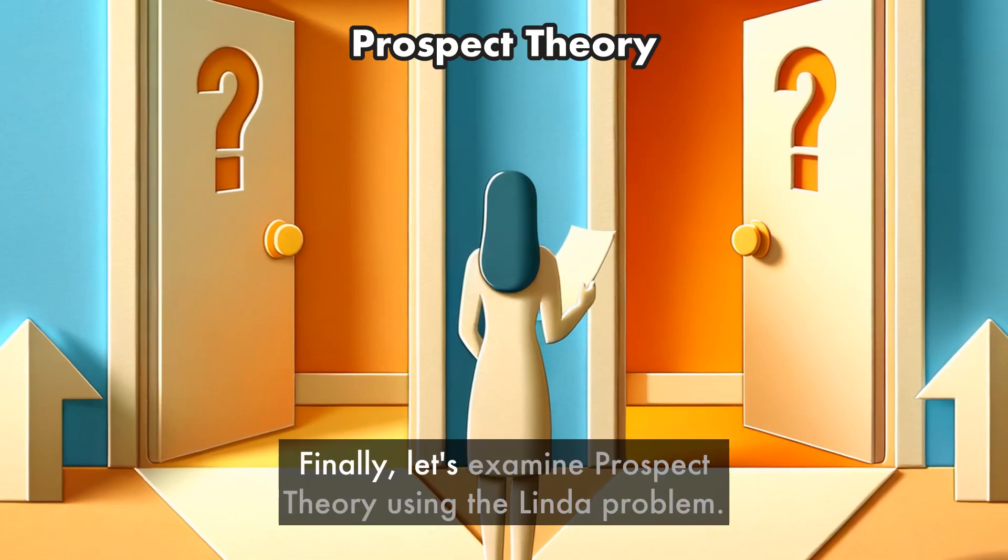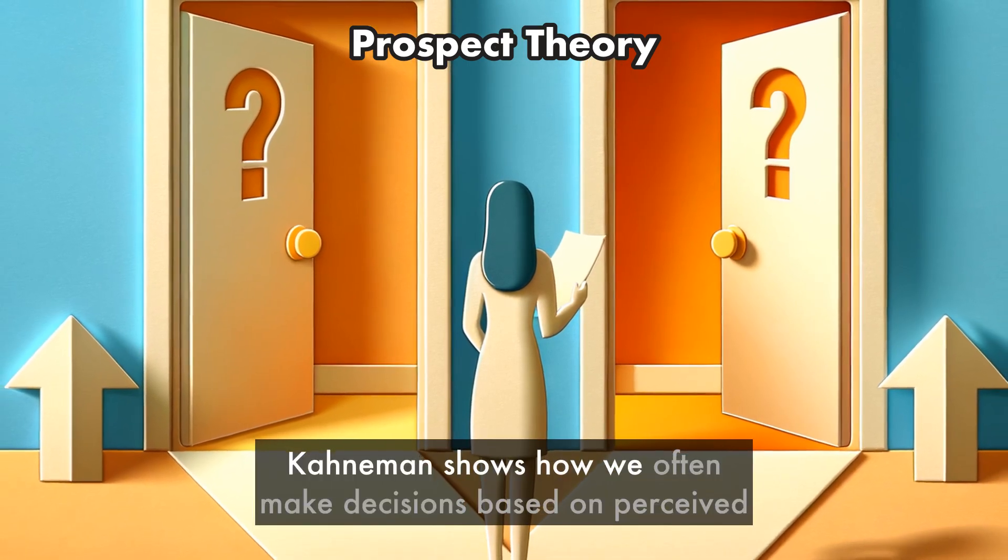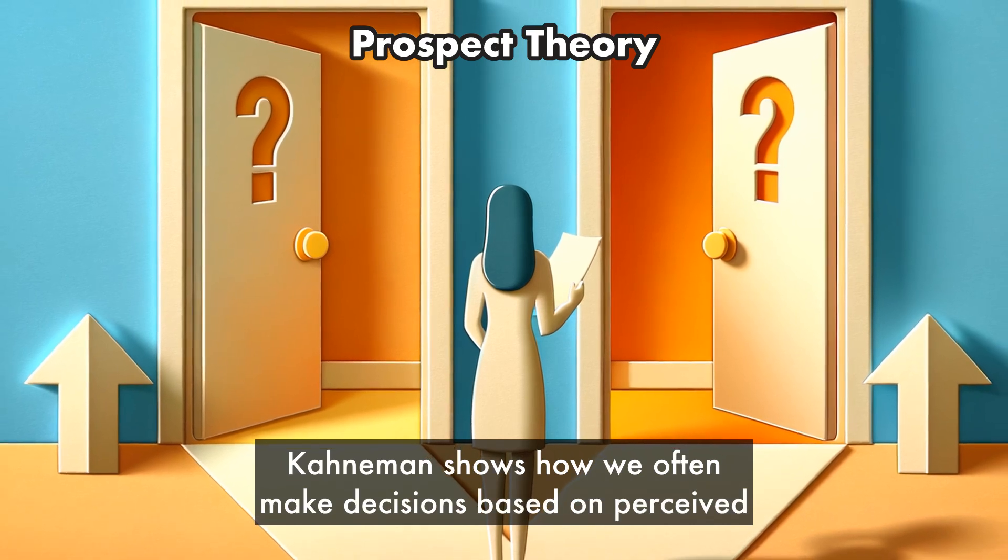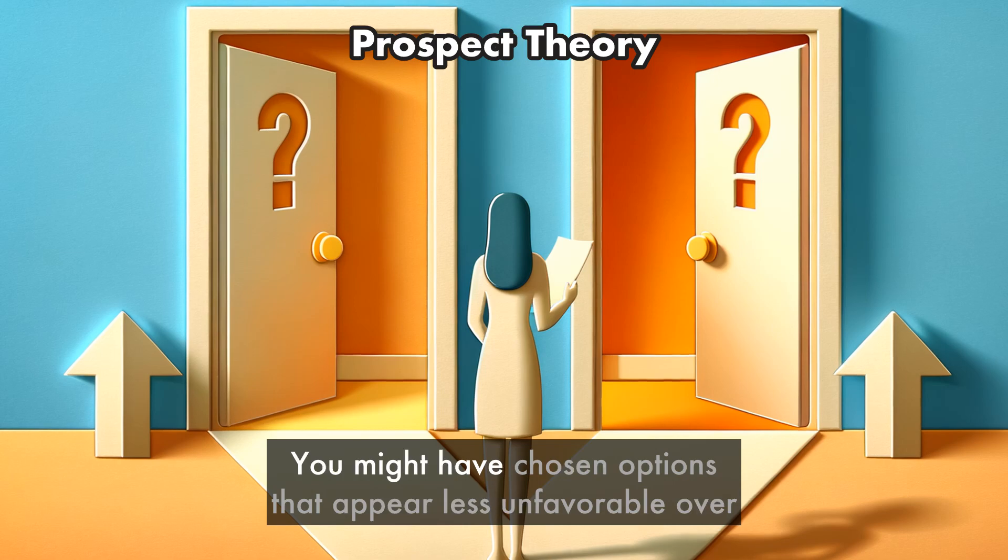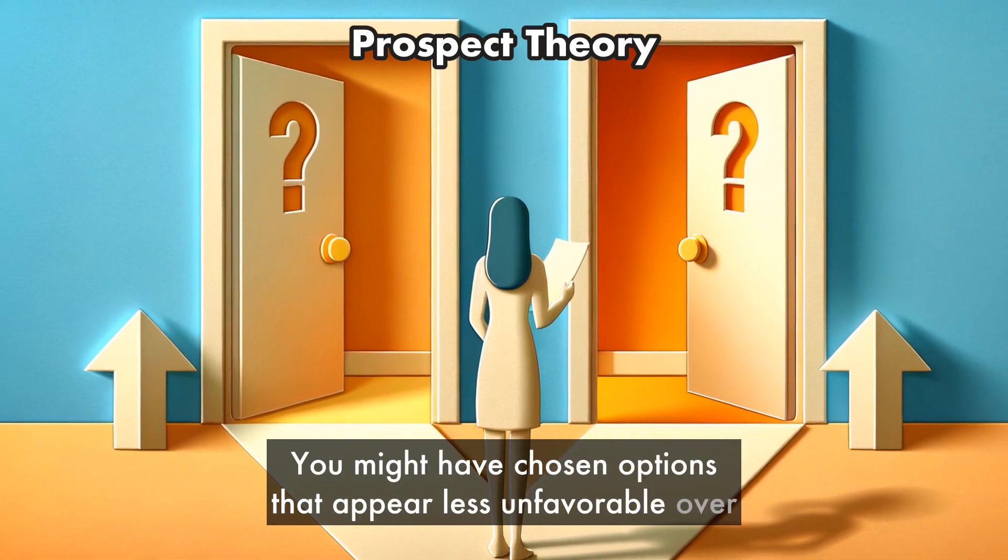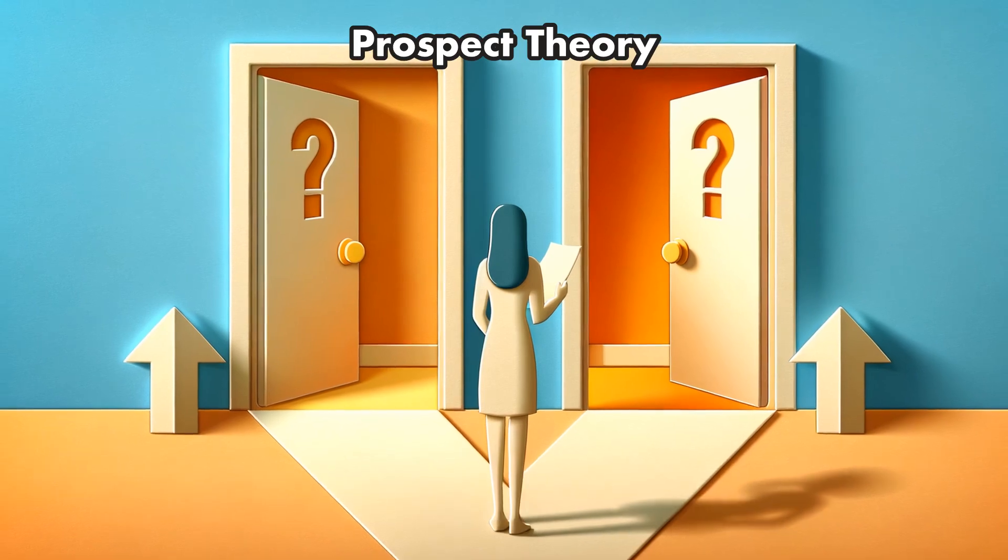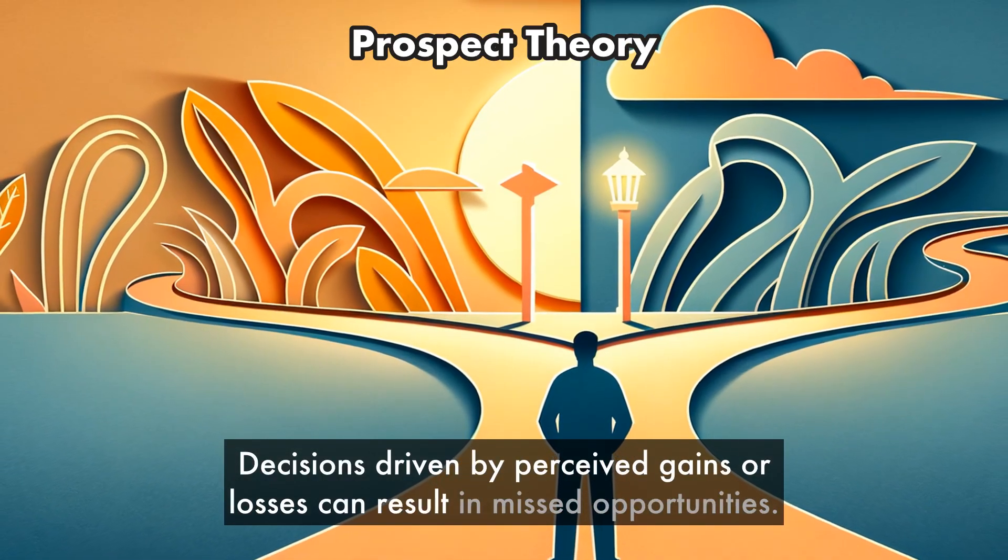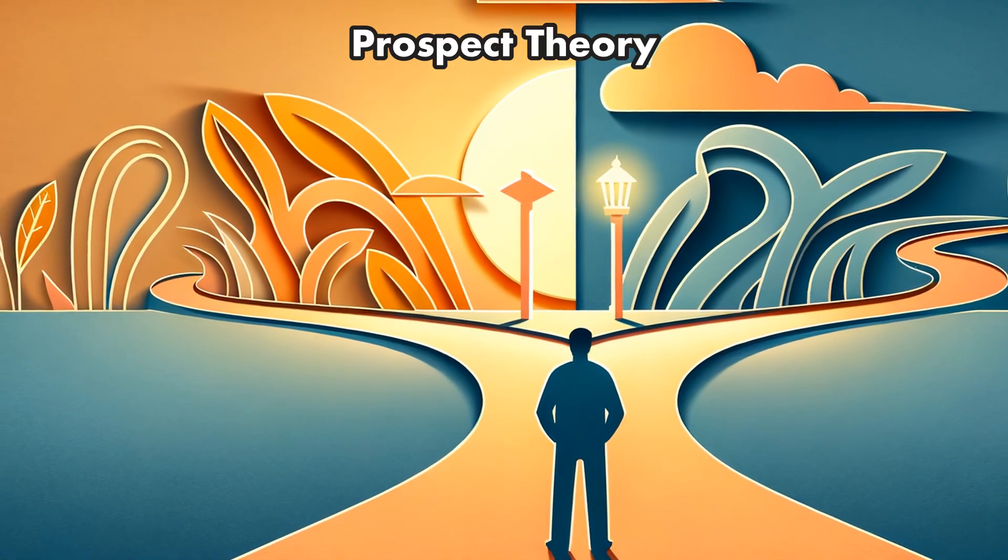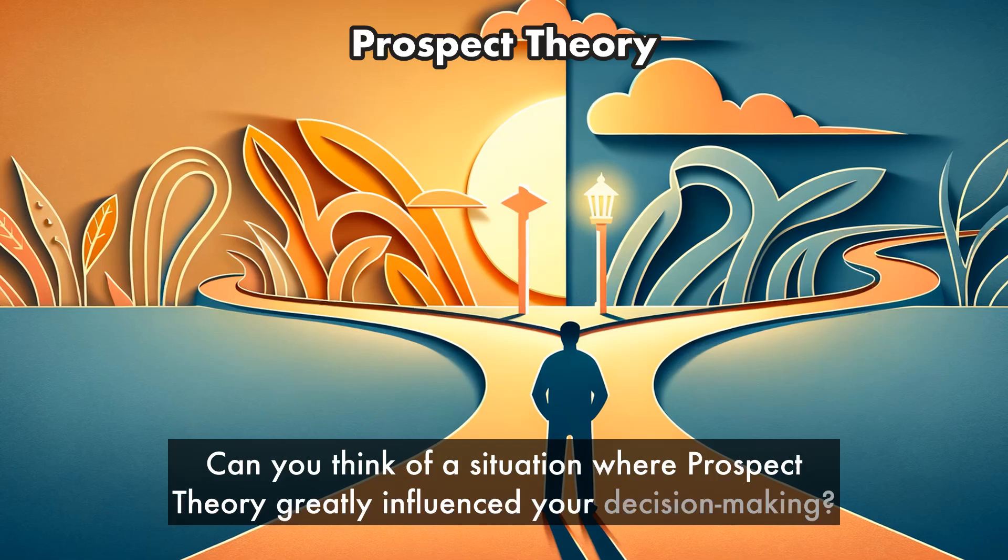Finally, let's examine prospect theory using the Linda problem. Kahneman shows how we often make decisions based on perceived gains or losses, rather than the final outcome. You might have chosen options that appear less unfavorable over those that are potentially more profitable but risky. Decisions driven by perceived gains or losses can result in missed opportunities. Can you think of a situation where prospect theory greatly influenced your decision-making?